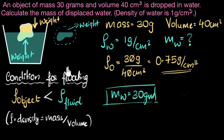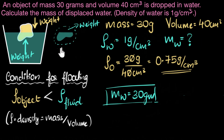So whenever objects are floating, the displaced liquid should have the same mass as that of the object. Because the object is stationary, the two weights have to be equal to each other. But what if the object is sinking? Let's do one more problem for that.